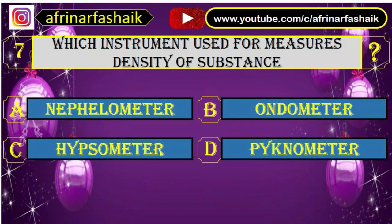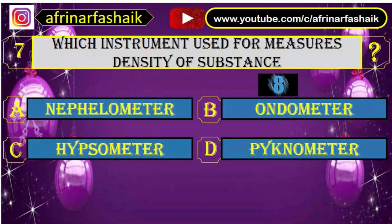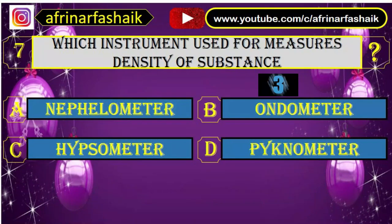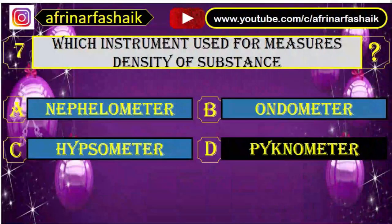Question number seven: which instrument is used to measure the density of a substance? Your options are A. Nephometer, B. Andometer, C. Upsometer, D. Pycnometer. D. Pycnometer is the right answer.